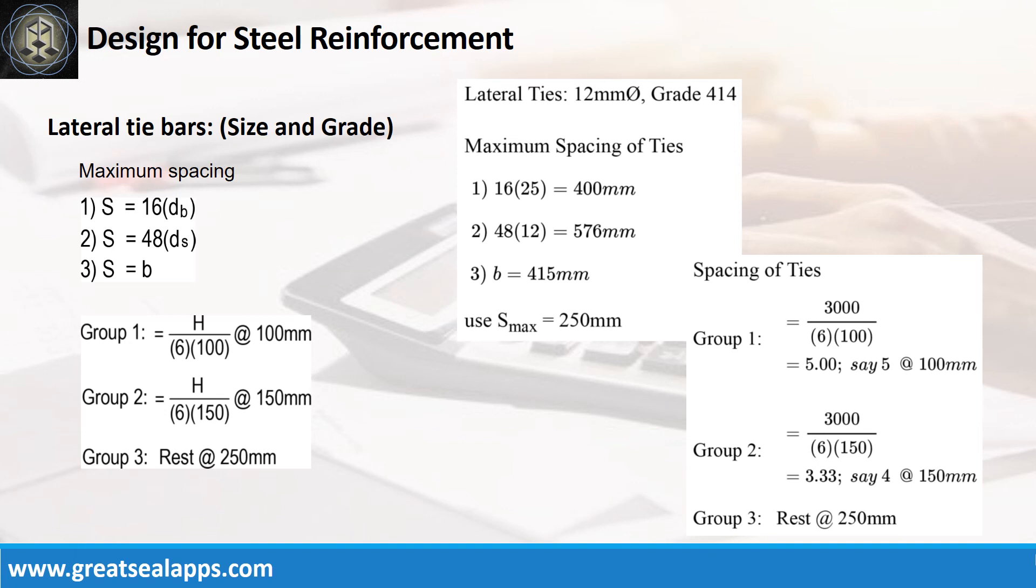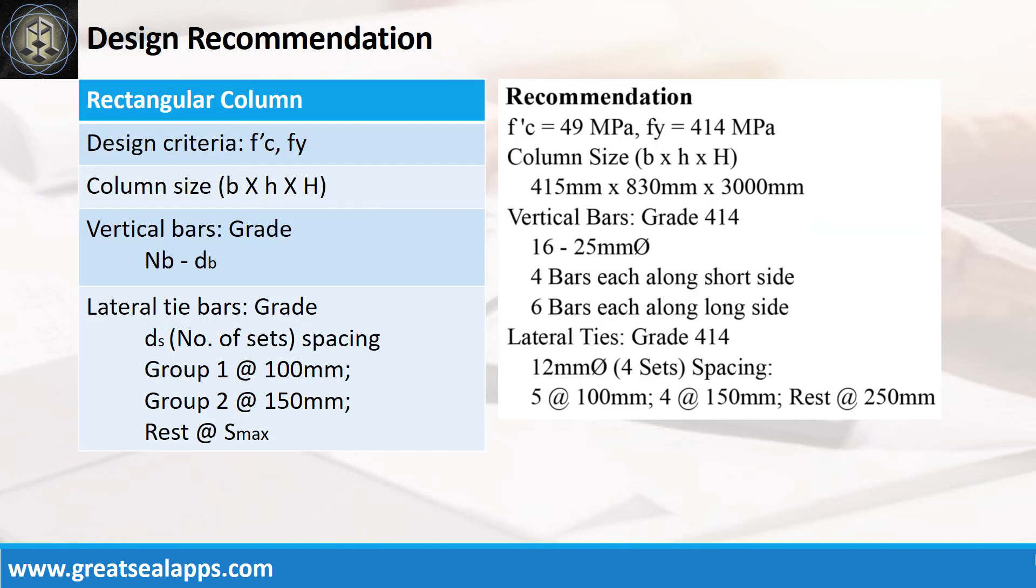Follow the given computations for lateral ties. Design recommendation as follows: f'c equals 49 MPa, Fy equals 414 MPa, column size is 415 mm by 830 mm by 3000 mm, vertical bars of grade 414, 16 pieces, 25mm bar, lateral ties of grade 414, 12mm bar, 4 sets spacing, 5 at 100 mm, 4 at 150 mm, rest at 150 mm.